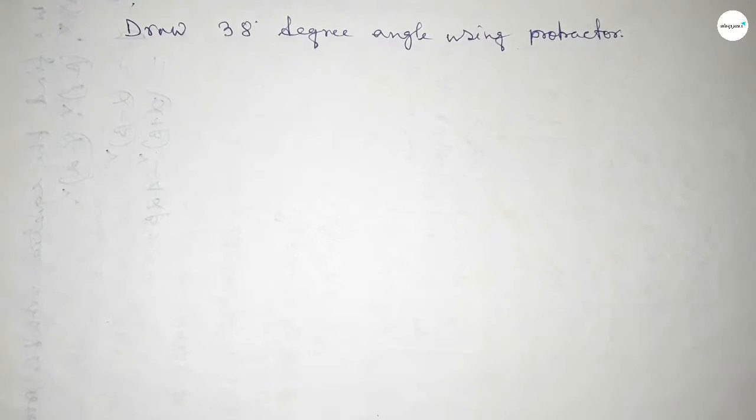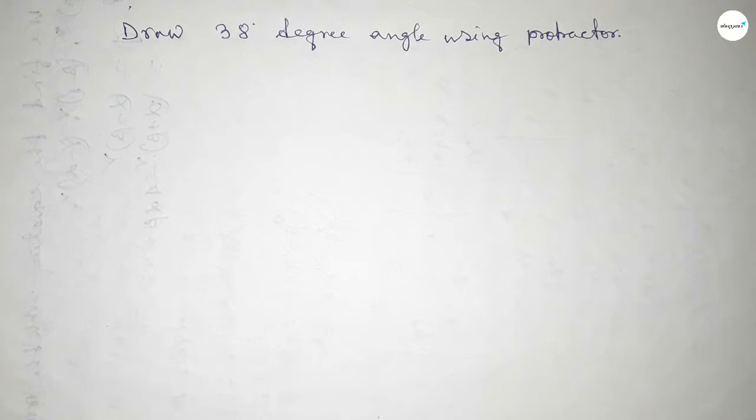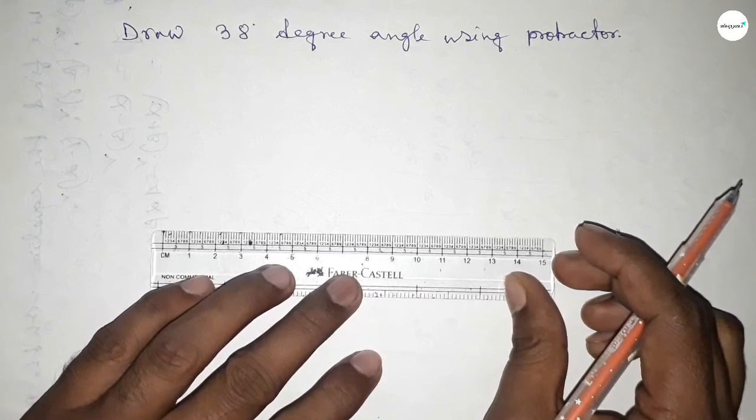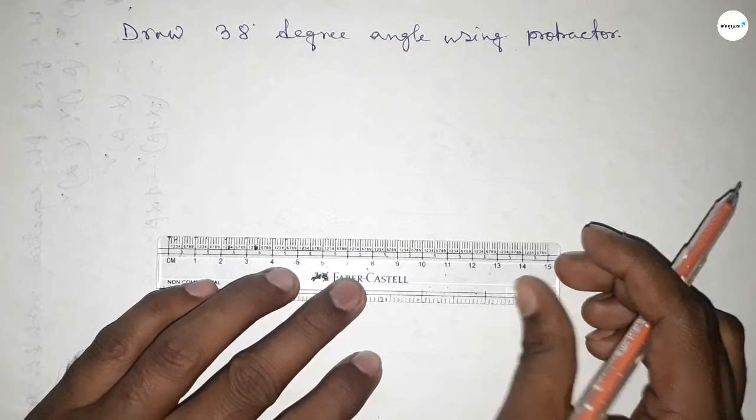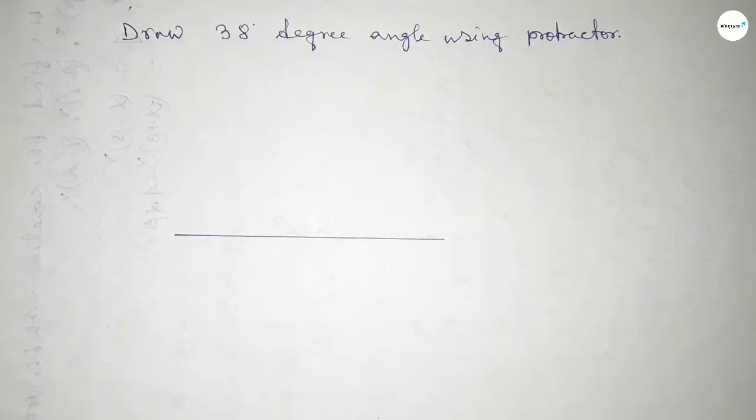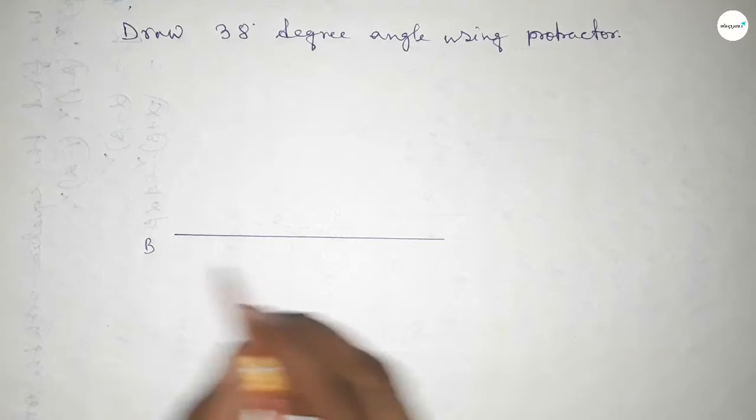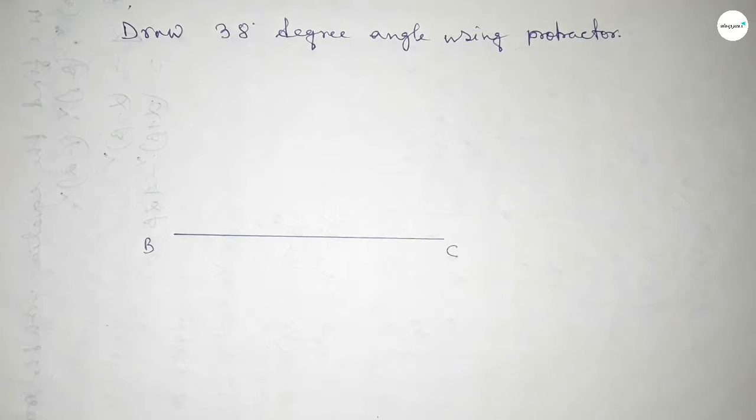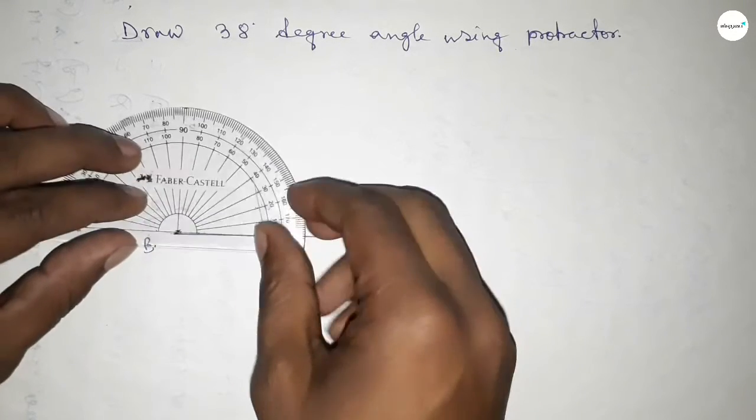Let's start the video. First of all, we have to draw a straight line of any length. Drawing a line here, next taking point B and point C. Now putting the protractor on point B perfectly.